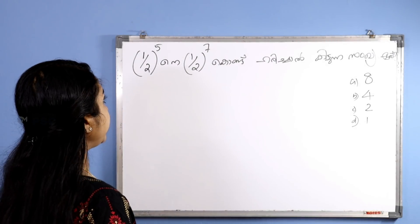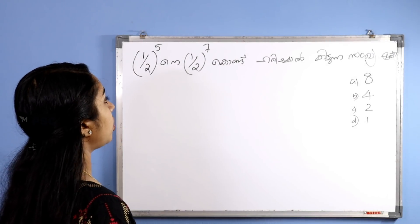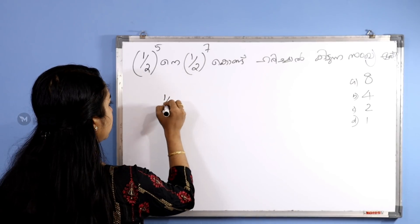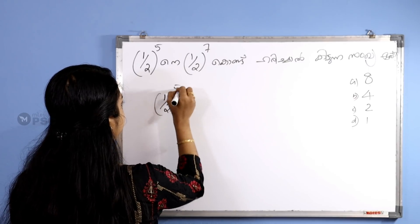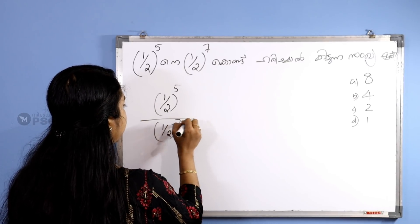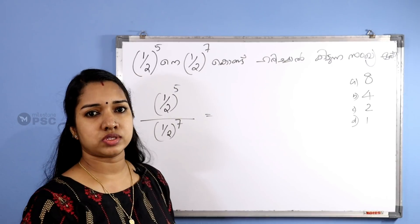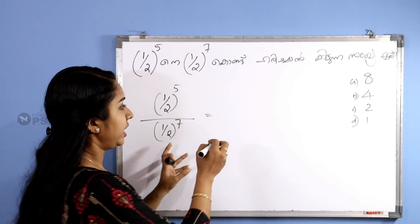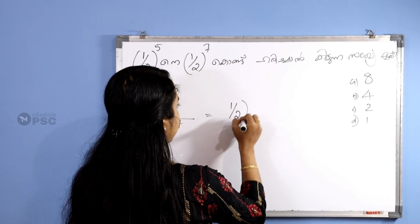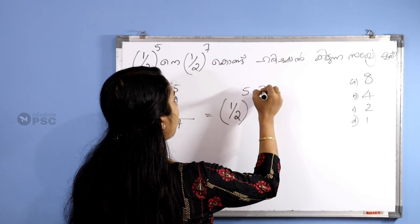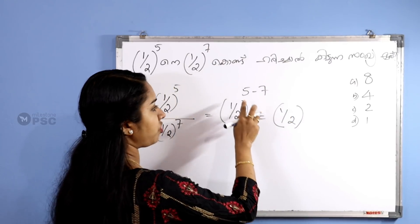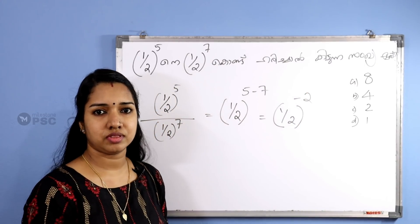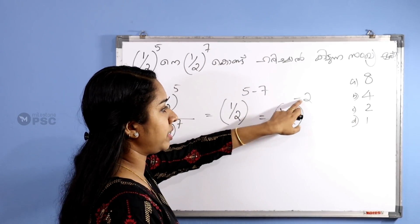Next question: 1 by 2 whole raised to 5 divided by 1 by 2 whole raised to 7. This is our question. Using the rule a raised to m divided by a raised to n equals a raised to m minus n, this becomes 1 by 2 whole raised to 5 minus 7, which is 1 by 2 whole raised to minus 2.